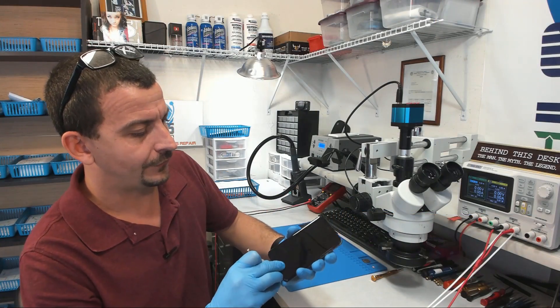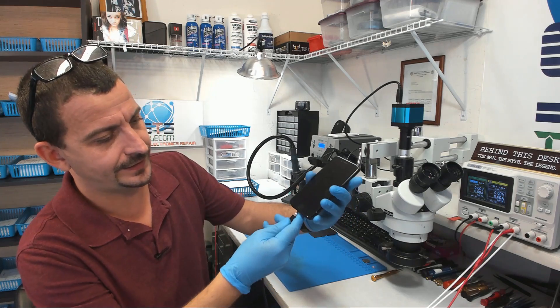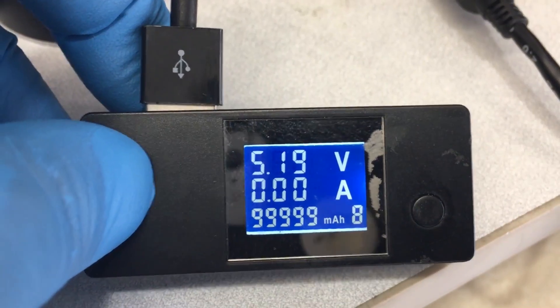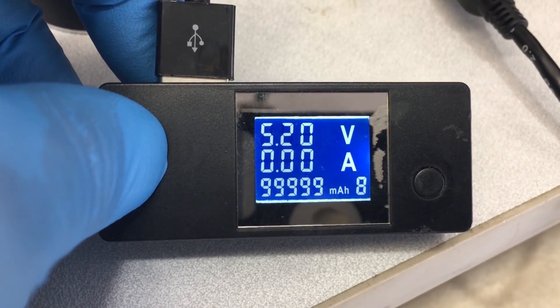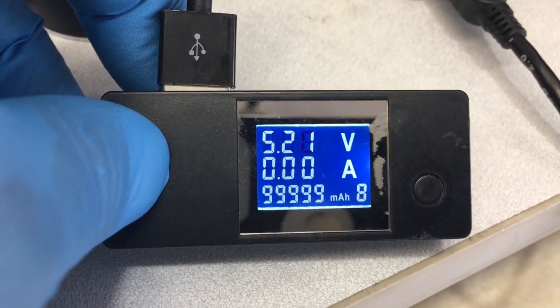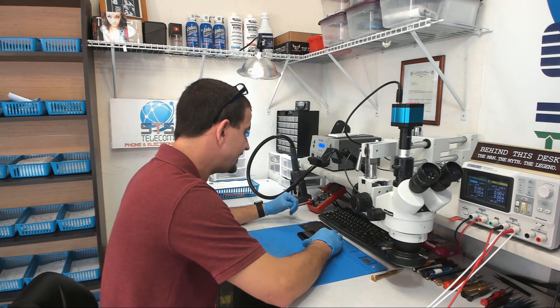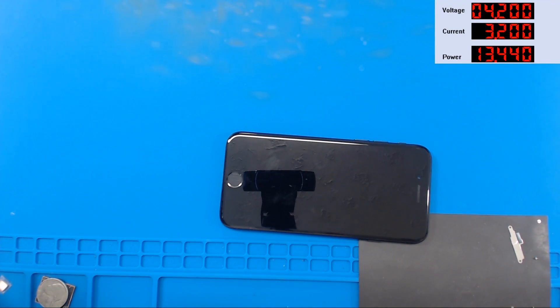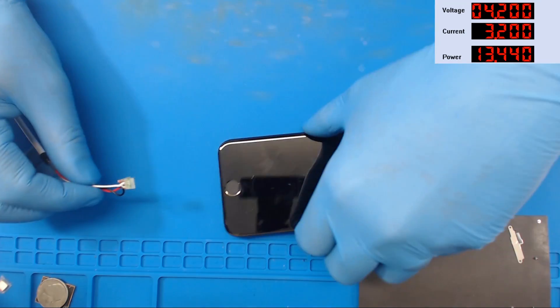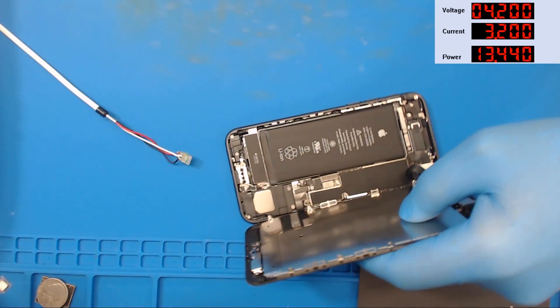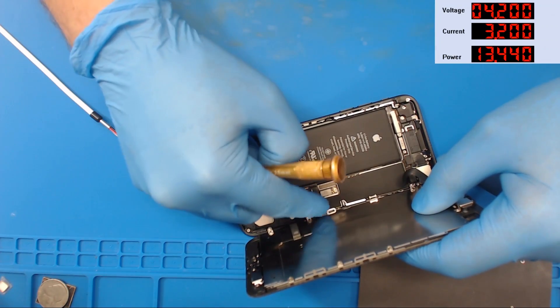Now the first thing I did before I opened it is I connected a charger, right? And we get nothing. We are drawing zero amps from a charger. So then we kick the charger aside. The next thing I do is I go straight for the DC power supply.